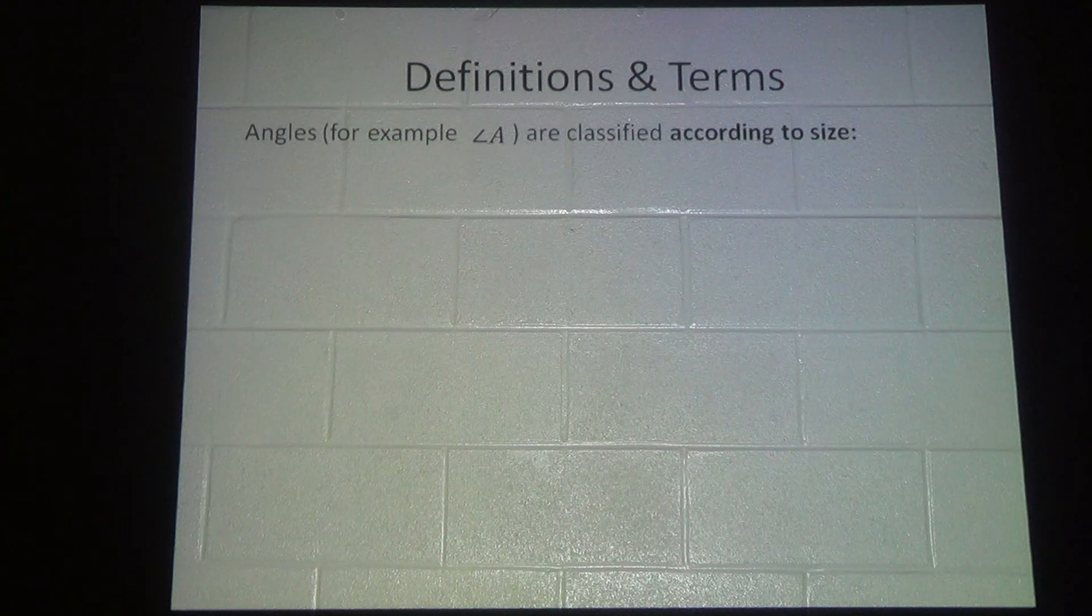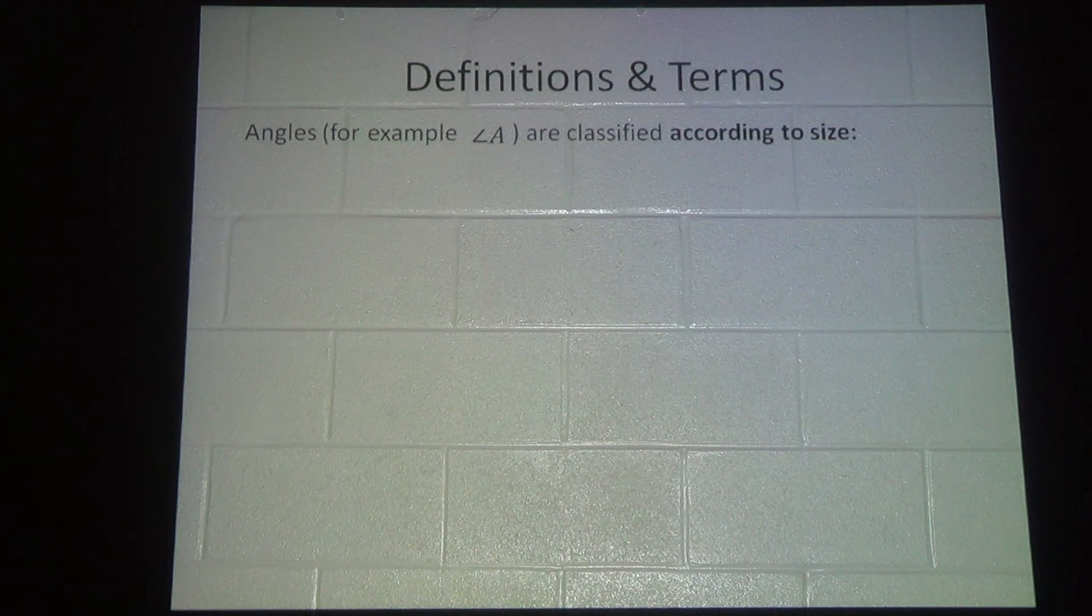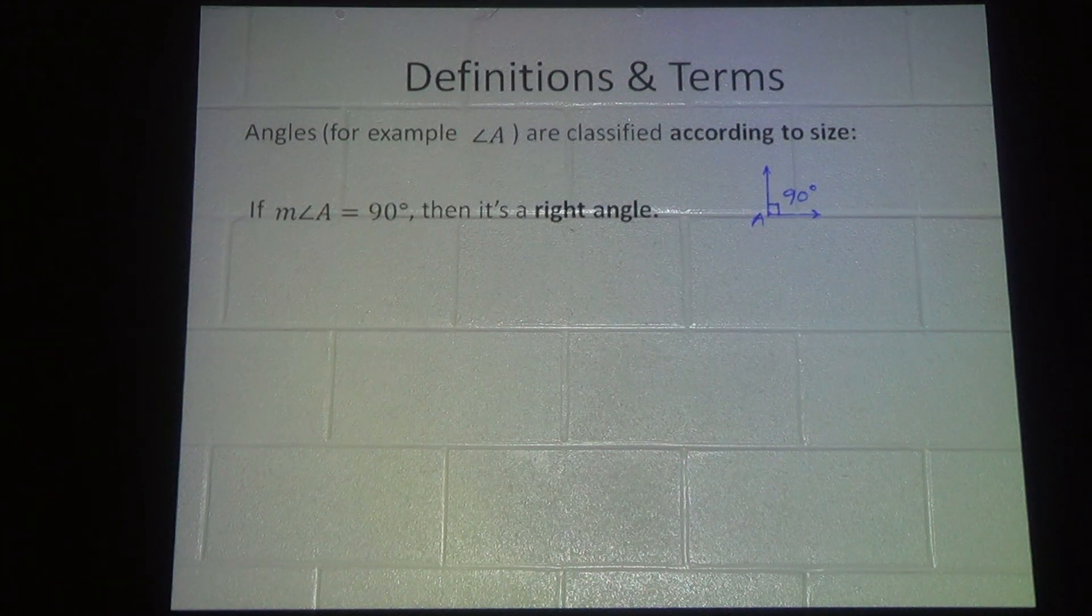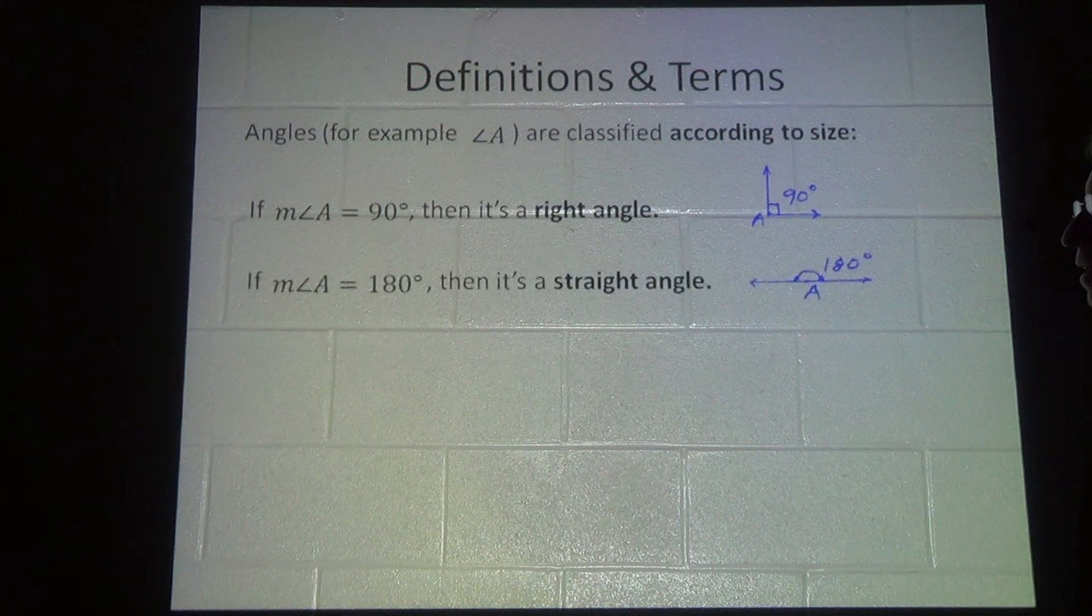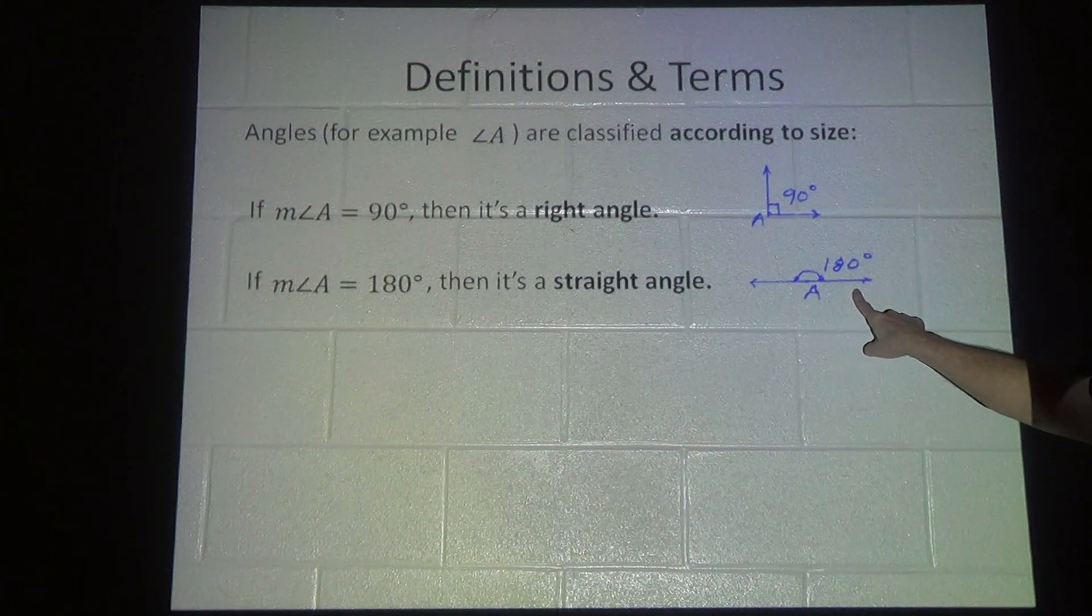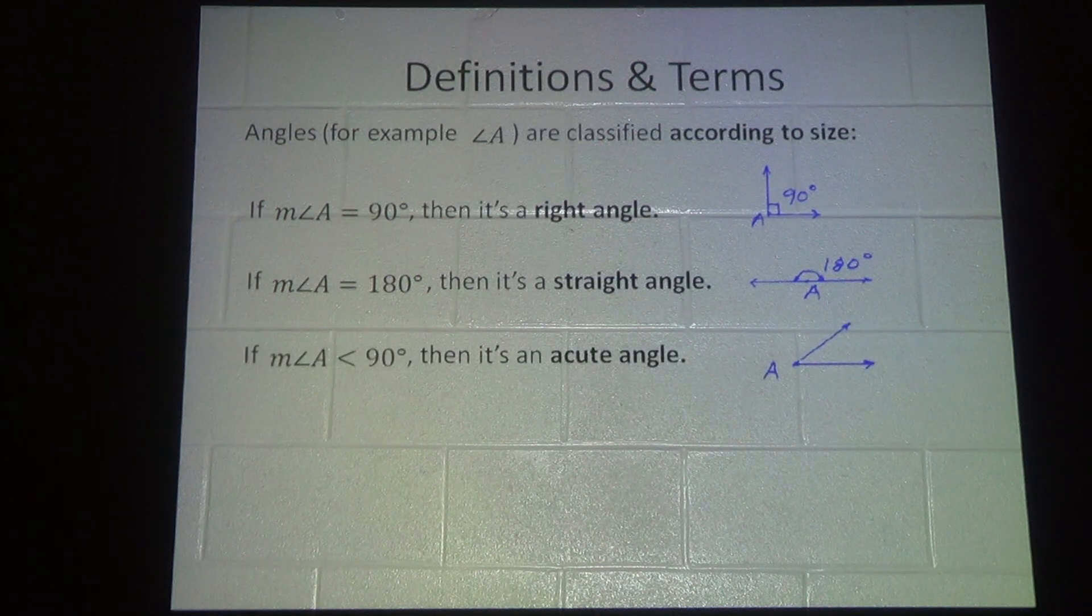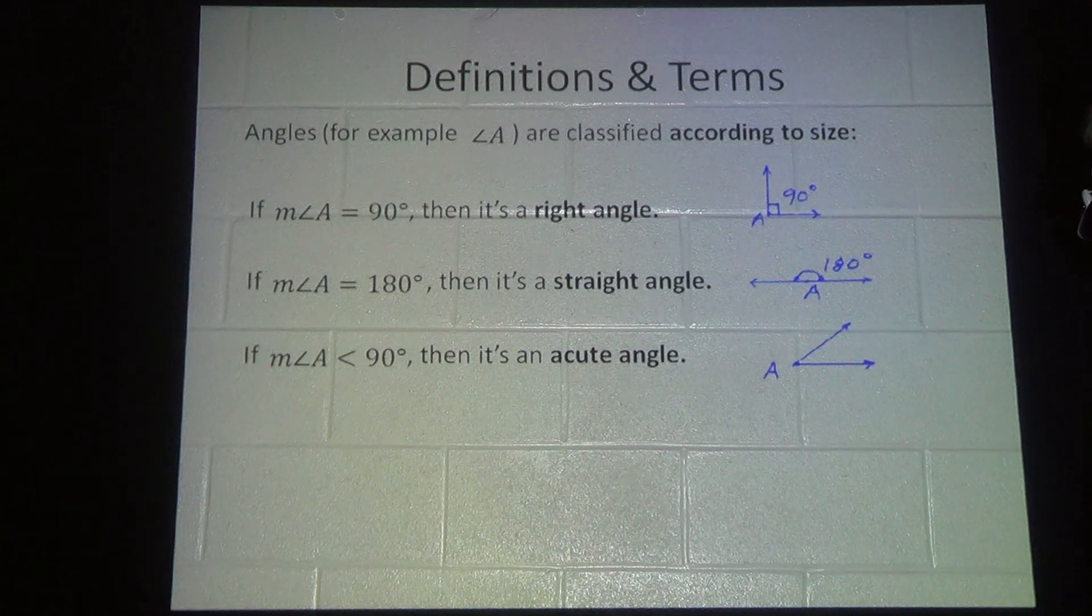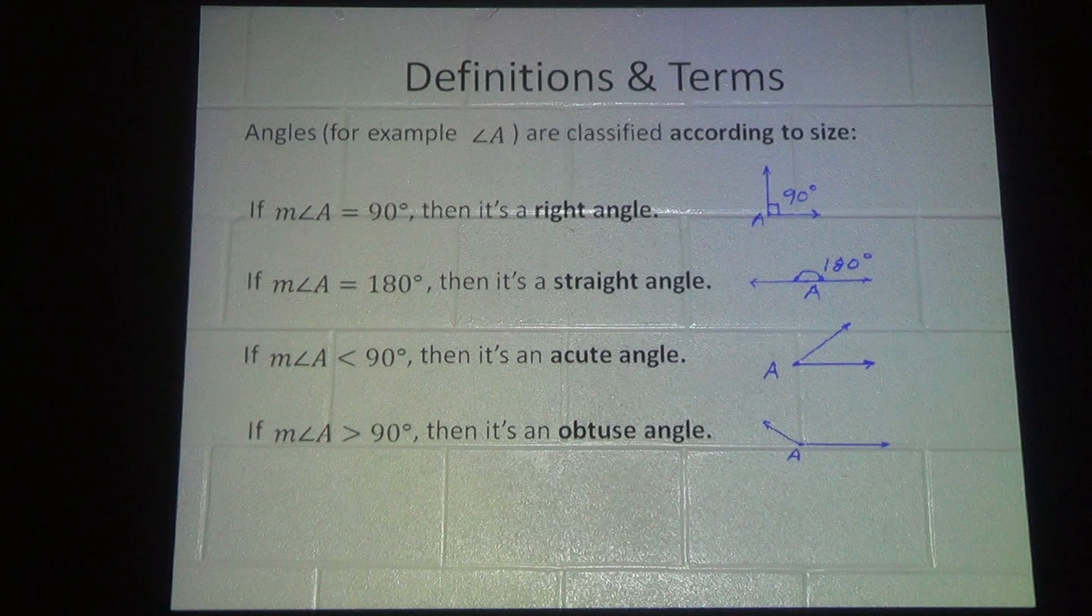Angles are classified according to size. This is something you should already know. If the measure of angle A is equal to 90 degrees, then it's a right angle. If it's equal to 180 degrees, then it's a straight angle. If it's less than 90 degrees, then it's an acute angle. And if it's greater than 90 degrees, it's an obtuse angle.